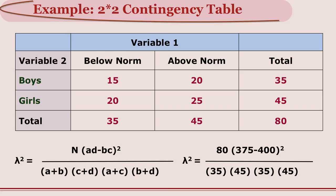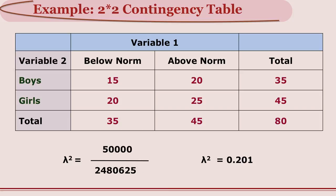Using the formula for chi square and substituting the values: N is 80. AD equals 15 multiplied by 25, which is 375; BC equals 20 multiplied by 20, which is 400. So AD minus BC is 375 minus 400, giving minus 25. Squaring gives 625, then multiplying by 80. Dividing by the product of the four marginal totals gives a chi square value of 0.201.